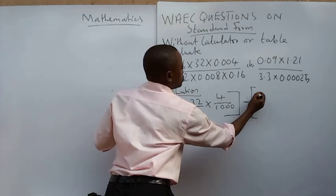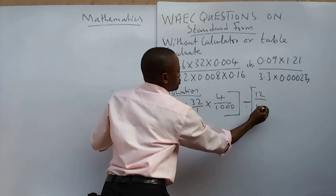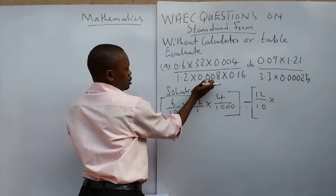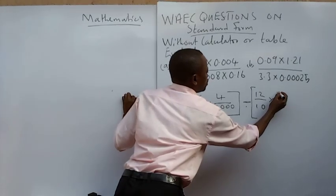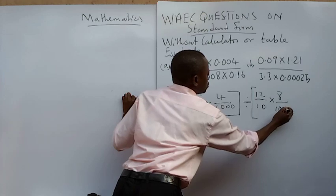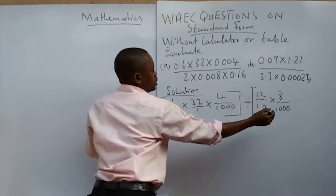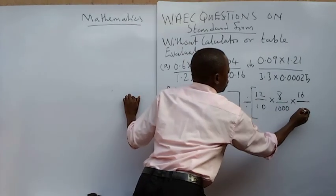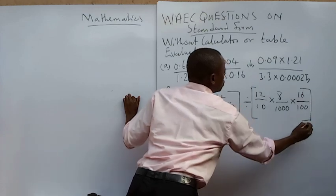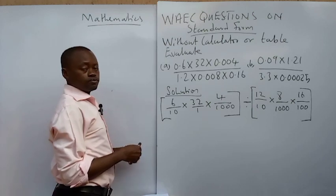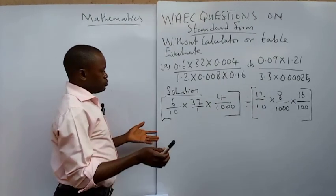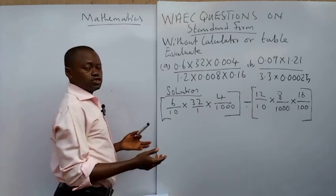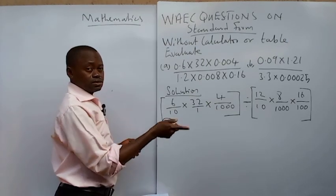And the denominator will be 12 over 10, multiplying 8 over 1,000, and then finally multiplying 16 over 100. I will close the bracket. So this is my approach in handling this problem. Now in division you invert and then multiply.